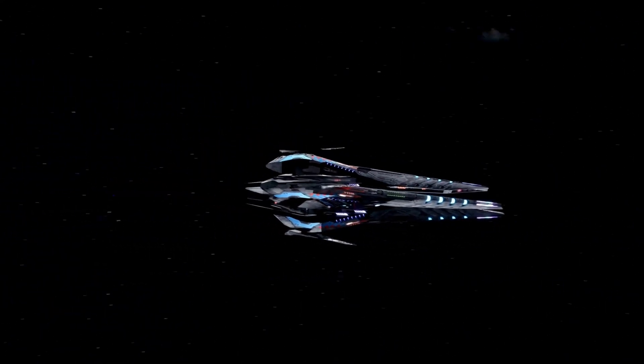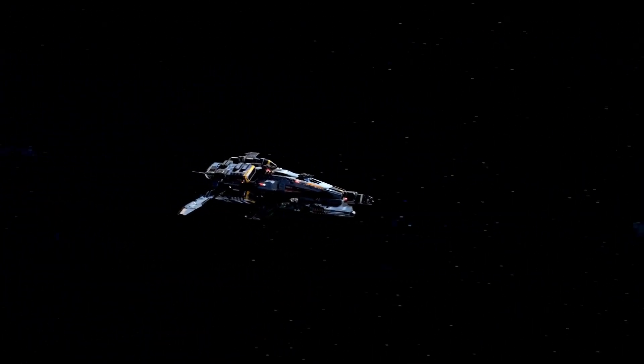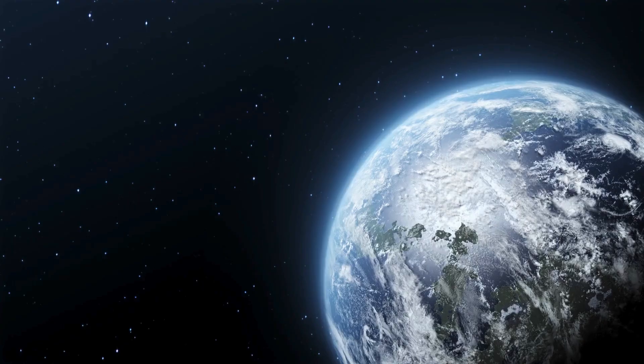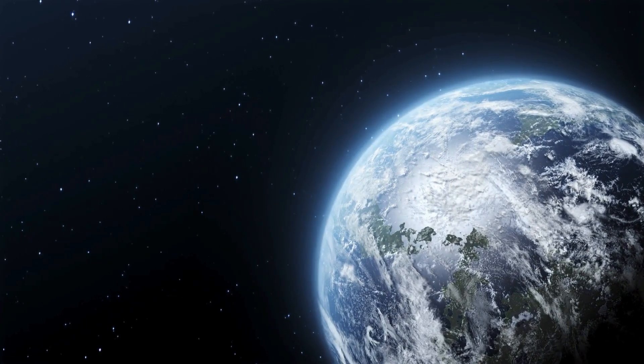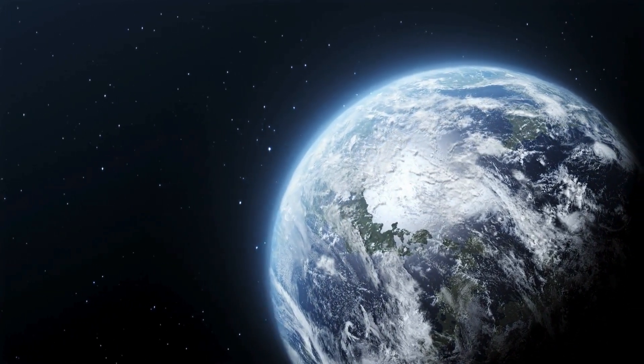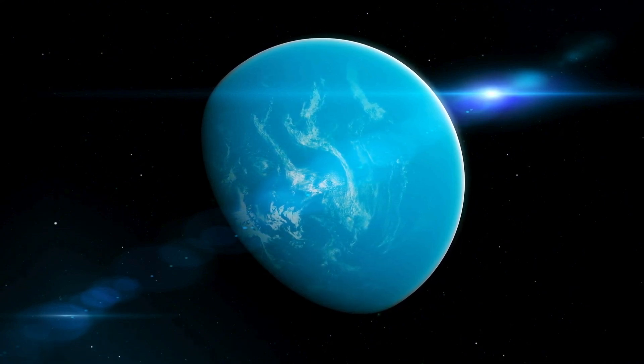Red dwarfs like Proxima Centauri are smaller, cooler, and have considerably longer lifespans than stars like our Sun. Their subdued brightness makes them challenging to observe, yet this characteristic places their habitable zones much closer to the star. For Proxima Centauri, this translates to an orbital distance of merely 0.05 astronomical units, a fraction of the distance between Earth and the Sun.